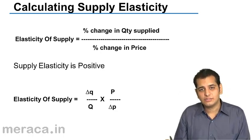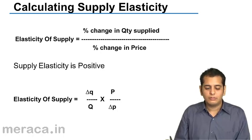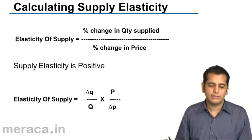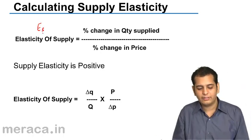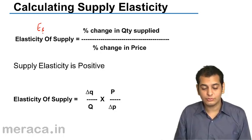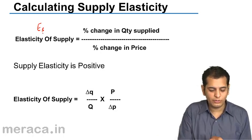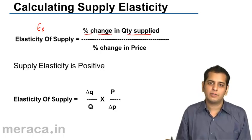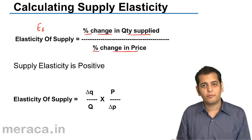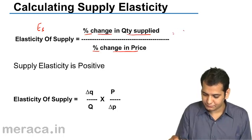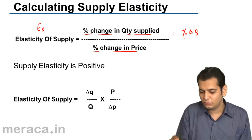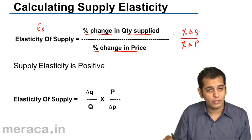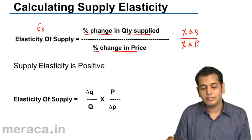Like we calculate the elasticity of demand, the formula that we use for it — the same formula is used for calculating the elasticity of supply. Elasticity of supply is generally denoted by E of S; we write E and in the subscript we write S. Elasticity of supply is nothing but percentage change in quantity supplied divided by percentage change in price, denoted by percentage change in Q upon percentage change in P, where Q denotes quantity and P denotes price.